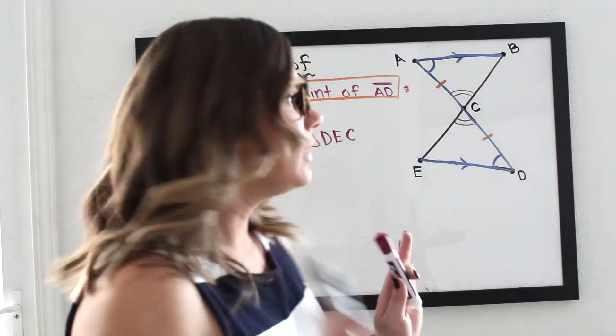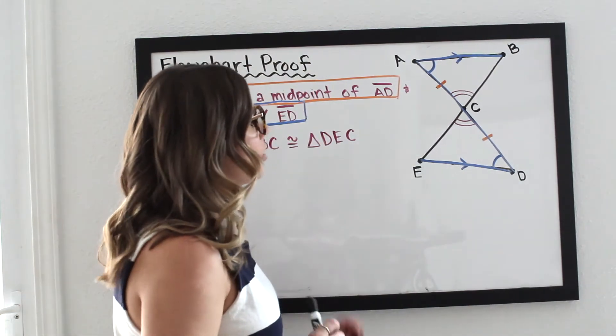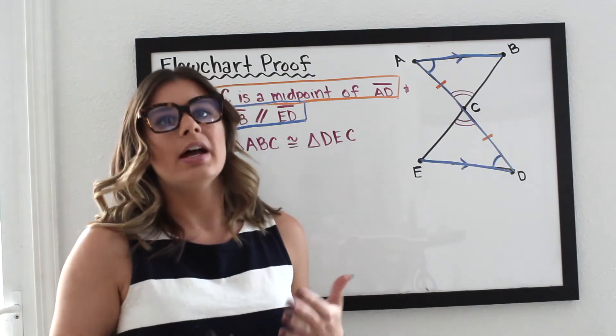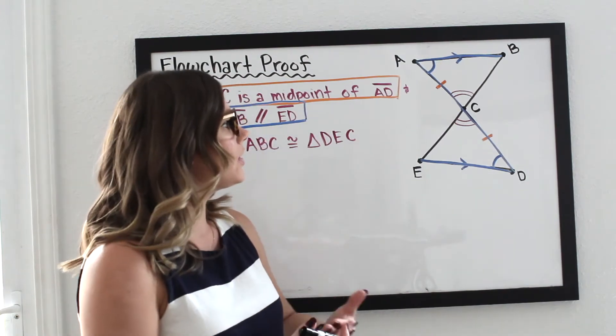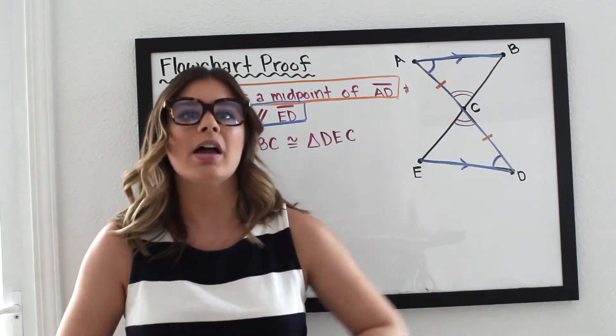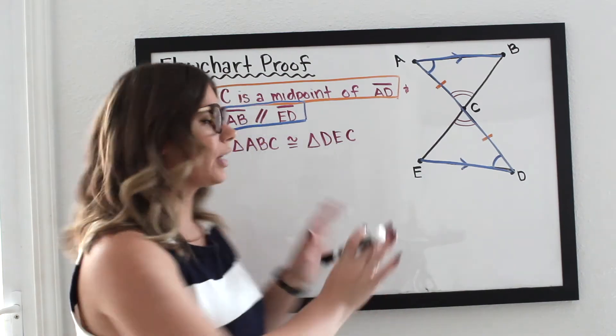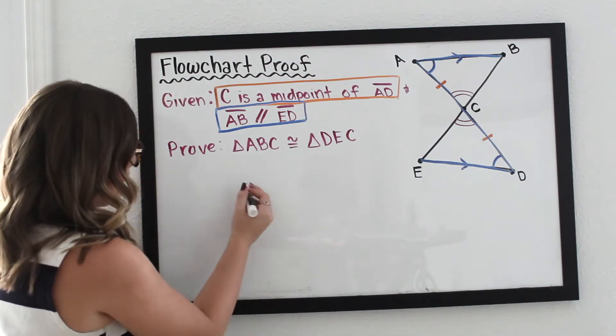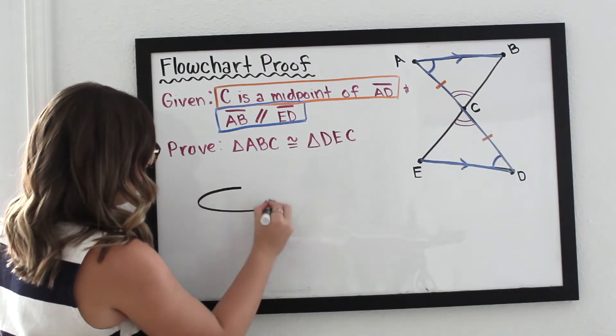Okay, so your next step, once we've decided on the theorem, is depending on the theorem you use, the number of letters in your theorem—we have angle, side, angle, or ASA, three letters—that is the number of bubbles you're going to put down for your flowchart proof. So I chose angle, side, angle, so I'm going to have three bubbles.